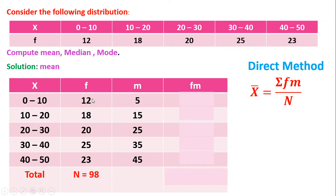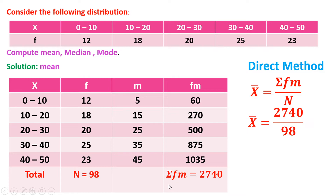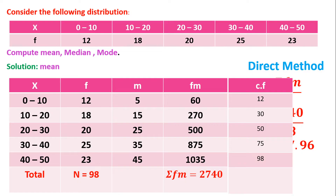Now multiply frequency by midpoint to get FM. 12 into 5 is 60. 18 into 15 is 270. 20 into 25 is 500. 25 into 35 is 875. 23 into 45 is 1035. Sigma FM equals 2740. So x-bar equals 2740 divided by n equals 98, giving mean equals 27.96.